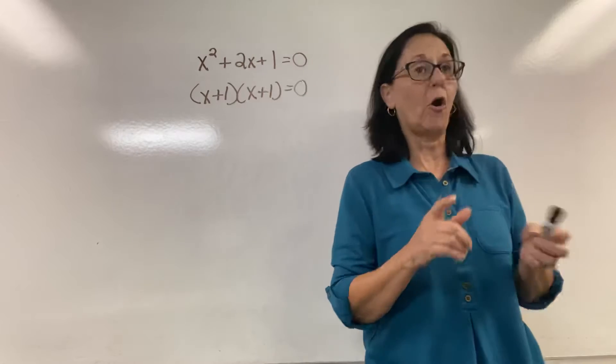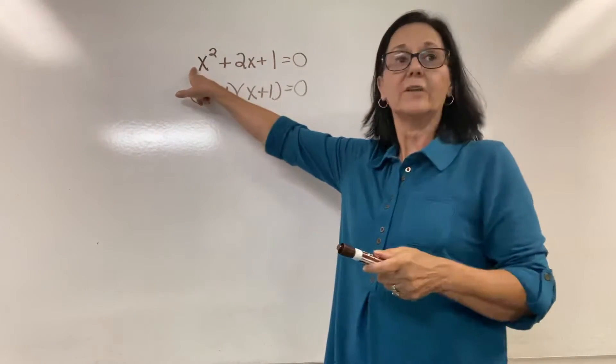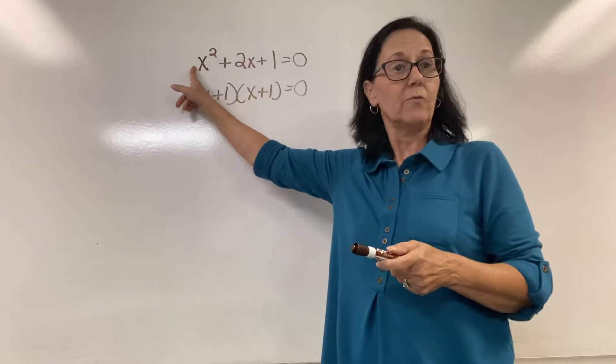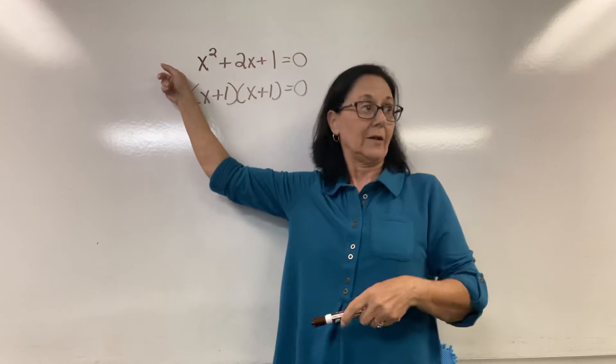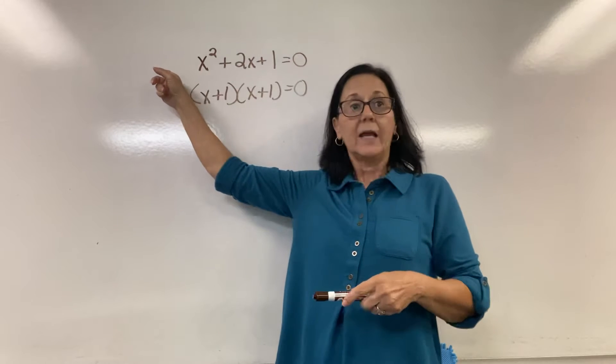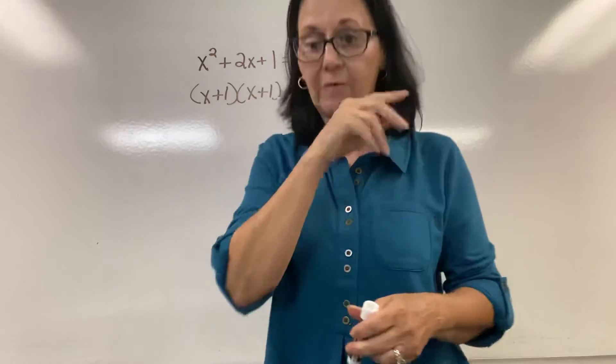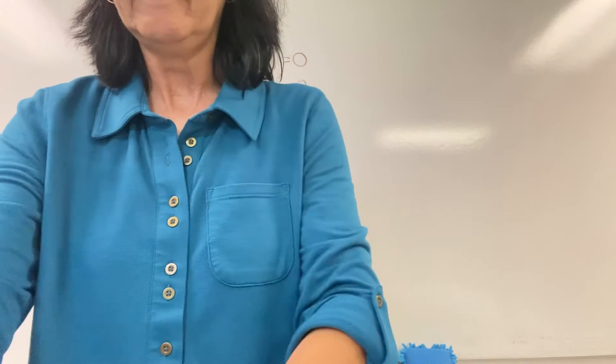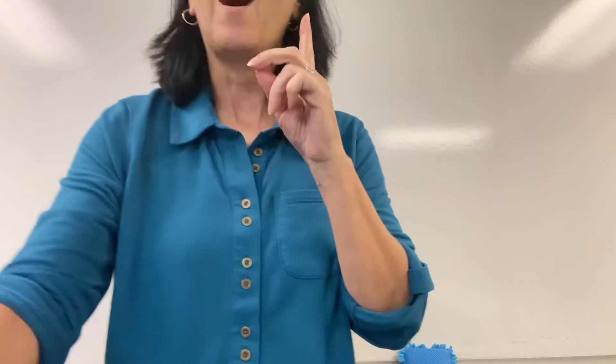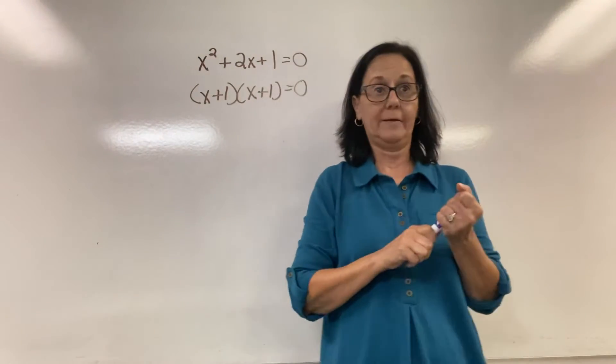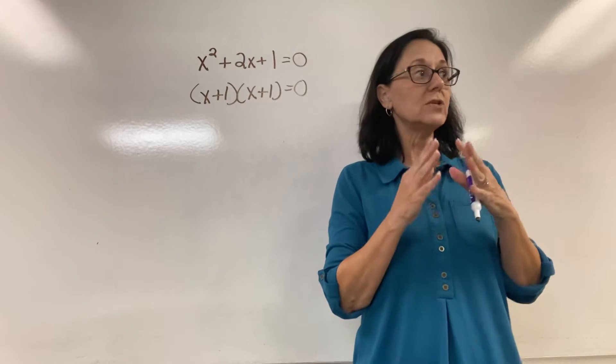In this lesson, for all the factors we've done so far, this is called the lead coefficient. It's the coefficient with the term that has the highest exponent. It's always been monic, meaning 1. We've always had a lead coefficient of 1. In advanced factoring, we're not going to have a lead coefficient of 1.